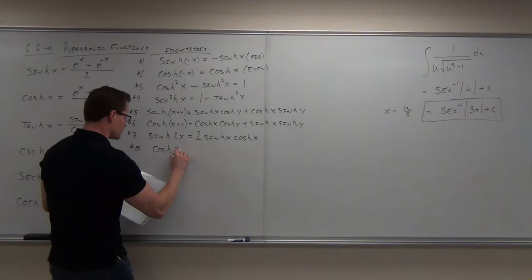Some signs are different — the derivative of cosh is not negative sinh, it's just sinh. When we did cosecant, the derivative was negative cosecant cotangent. Same thing here: the derivative of hyperbolic cosecant is negative hyperbolic cosecant times hyperbolic cotangent. So the integral of hyperbolic cosecant cotangent is negative hyperbolic cosecant.